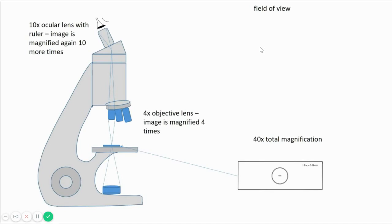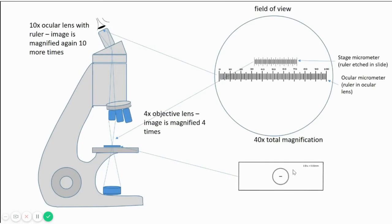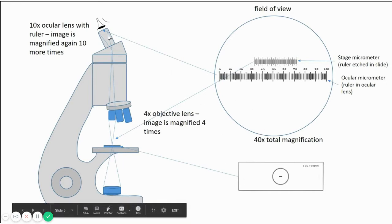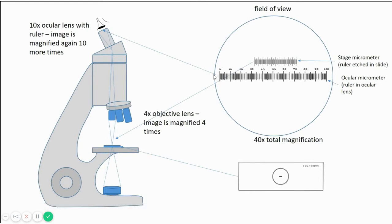Right now on your stage, you have kept the stage micrometer which looks like this, and you are now going to see something like this. In your eyepiece, your eyepiece graticule is already there, which is this one. Look at the arrow. Your eyepiece graticule scale is visible because it is in your eyepiece lens. You have kept the stage micrometer on the stage, so you can see the stage micrometer scale also. You can see two scales now. This is at 40x.